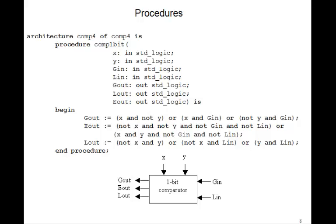So, here's how you do it. In the architecture, after the word is and before the begin of the architecture, where you normally put your component declarations, we're going to put the word procedure comp1bit. So we're defining this 1-bit comparator that we designed. The inputs are x, y, gin, and lin. Those are of type standard logic, single bits. And the outputs are gout, lout, and eout. So this is what we're making.